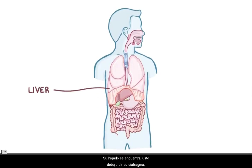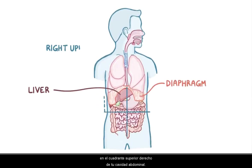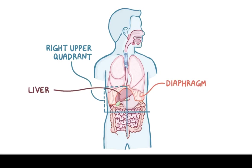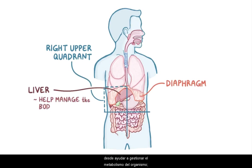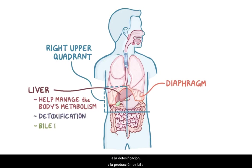Your liver lies just below your diaphragm, in the right upper quadrant of your abdominal cavity, and it does a wide range of things, from helping to manage the body's metabolism, detoxification, and bile production.